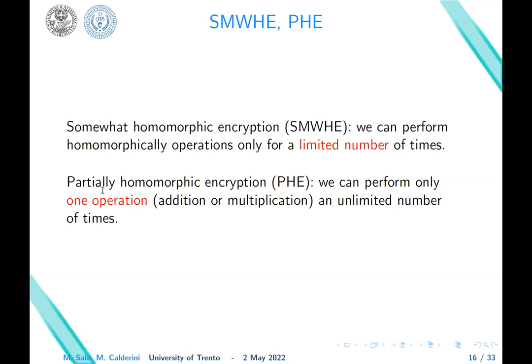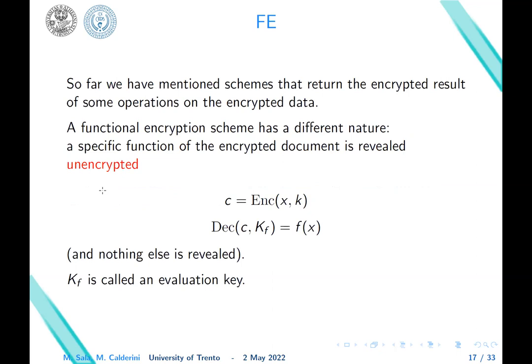Weaker than full homomorphic encryption is somewhat homomorphic encryption. In these schemes, we can perform homomorphically some operations only for a limited number of times. We can perform addition and multiplication, for example. In contrast, in partially homomorphic encryption, we can perform an unlimited number of times the same operation. So we can perform only one operation, addition or multiplication for example, but as many times as you want.